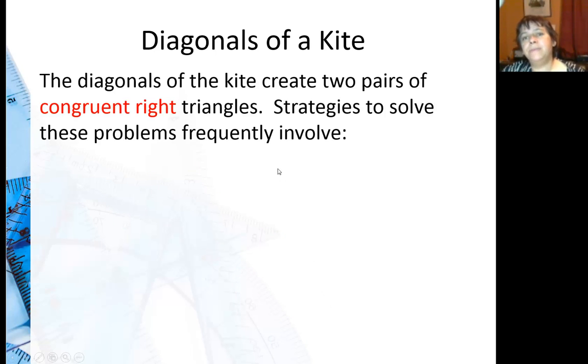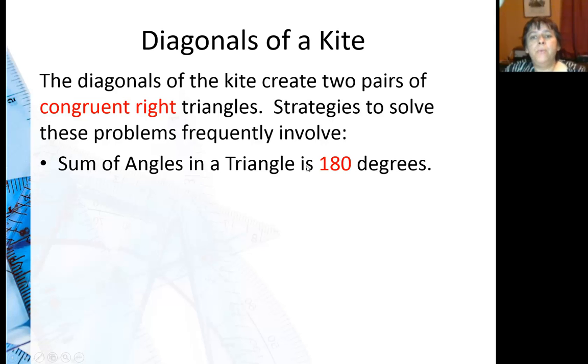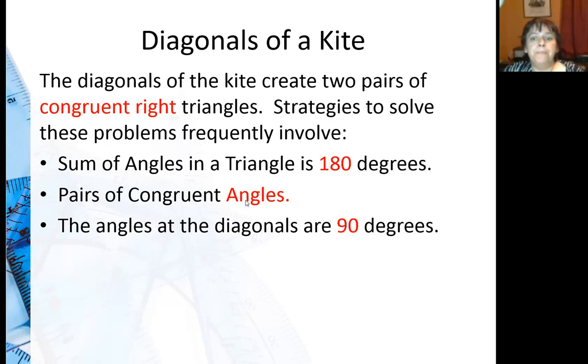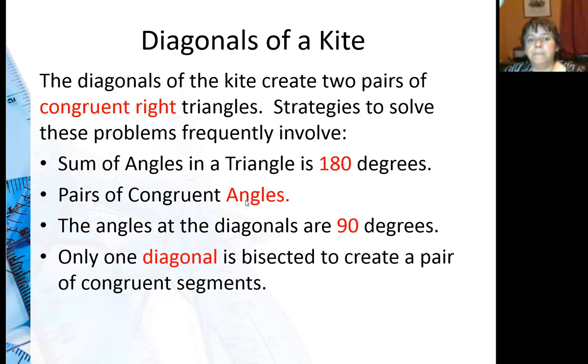So working with diagonals of a kite, basically it's important to know that they create two pairs of congruent right triangles. So if you position your kite so that the two congruent angles are across from each other horizontally, you're going to have a set of congruent right triangles on top here and on bottom. Some strategies that you can use to solve these, one is that the angles add up to 180. Also they create pairs of congruent angles. Remember that it's going to bisect some angles, so that might be helpful. And the angles of diagonals are 90 degrees. You might end up using Pythagorean theorem quite a few times on these. And only one diagonal is bisected to create a pair of congruent segments. Not both, just the one. And it should be the one that makes sense. We usually think of it as a short one, but it's not always a short one.